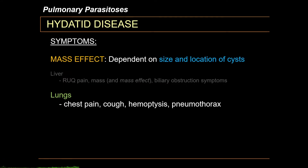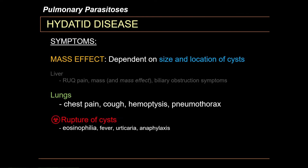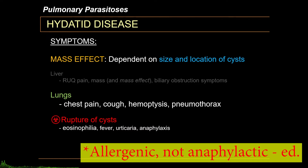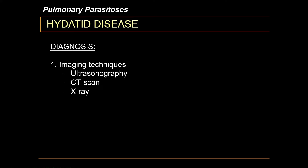The symptoms of hydatid disease depend on the mass effect, meaning symptoms are related to the size and location of the cysts. While the liver is the most common site, the lungs are the second most common site. Pulmonary manifestations include chest pain, cough, hemoptysis, and pneumothorax in rare cases. The most important consideration is accidental or intentional rupture of cysts. The fluid inside the cysts is highly anaphylactic and would cause eosinophilia, fever, urticaria, and even anaphylactic shock. Diagnosis heavily relies on imaging techniques such as ultrasonography, CT scan, and x-ray. The water lily sign is seen in hydatid infections.